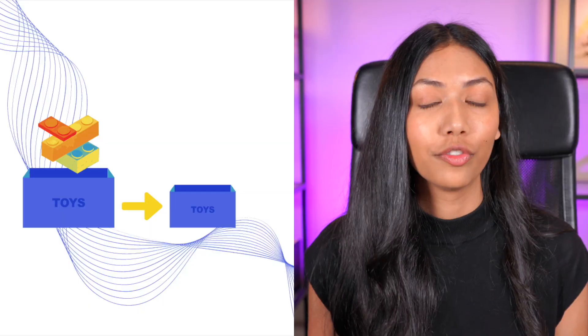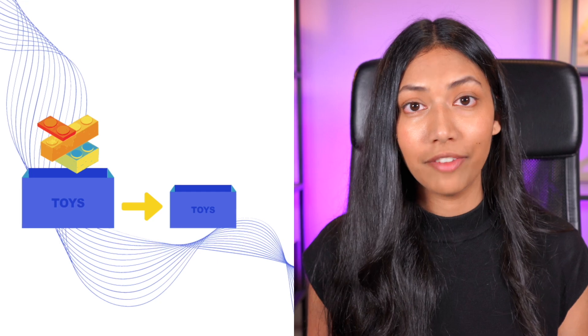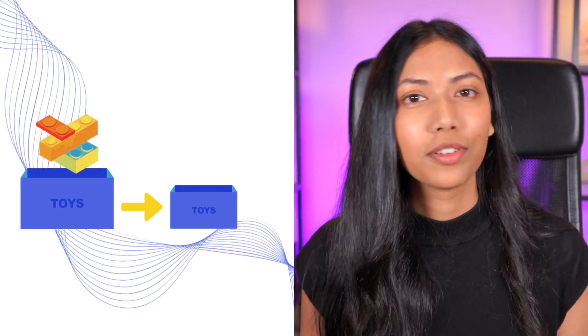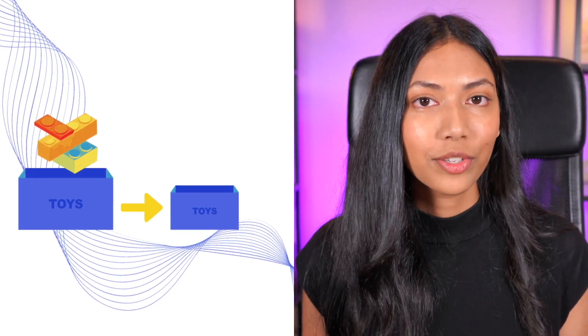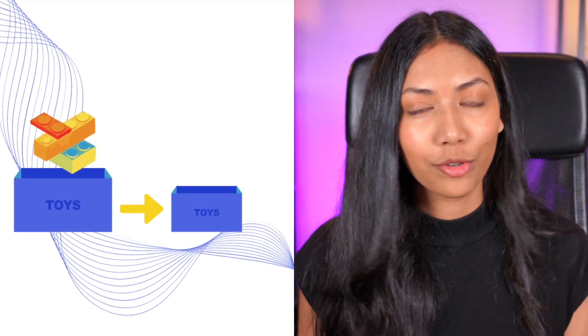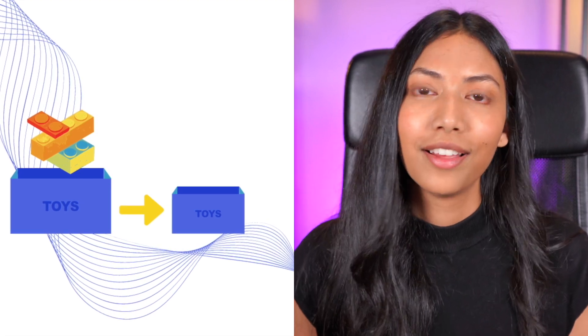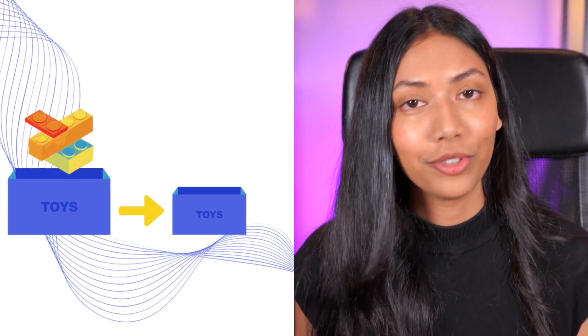This process helps auto-encoders learn efficient data representations. To better understand how auto-encoders work, imagine you have a box full of toys and you want to fit them all into a much smaller box. You need to find a really efficient way to place the toys so they fit — and this is exactly what auto-encoders do.